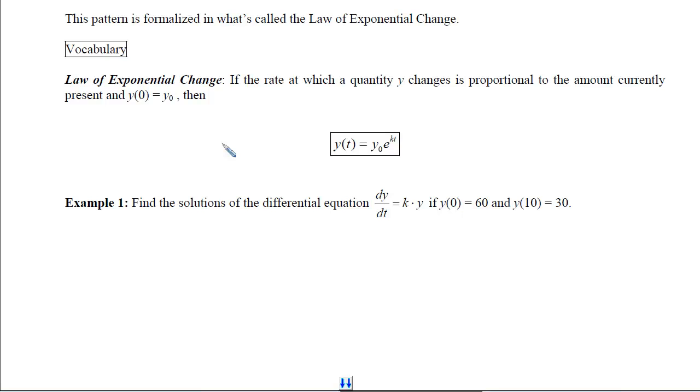This pattern is formalized in what's called the law of exponential change. The law of exponential change says that if the rate at which a quantity y changes is proportional to the amount currently present, and that initial amount is y sub 0, then we can write the amount for all time will be that initial amount times e to the kt.